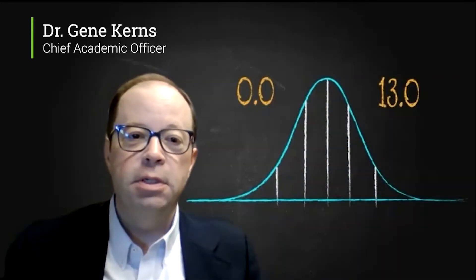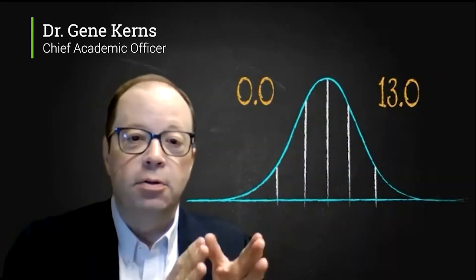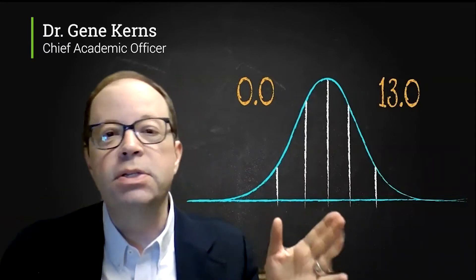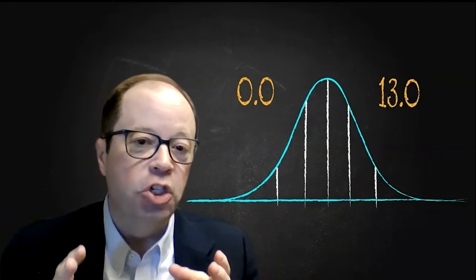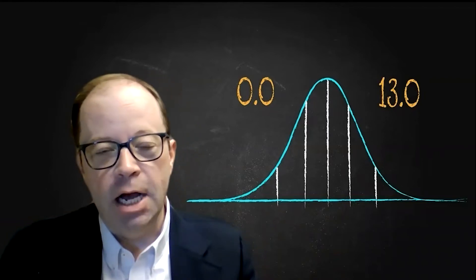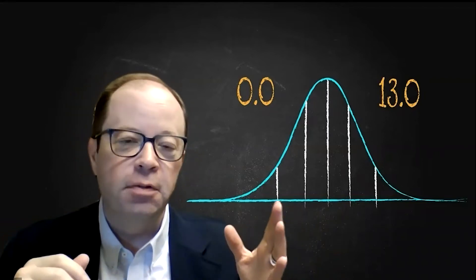Let's take just a moment to talk about a very commonly used but often wildly misinterpreted score: the grade level equivalent score, or GE for short. As you can see in the background, grade level equivalent scores range from 0.0 up to 13.0.